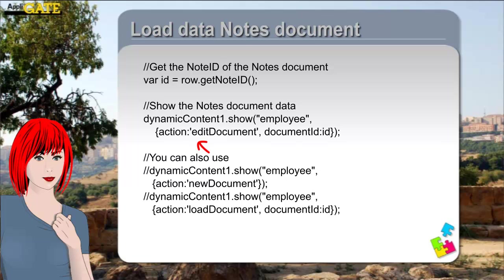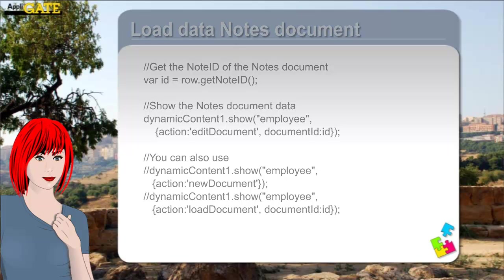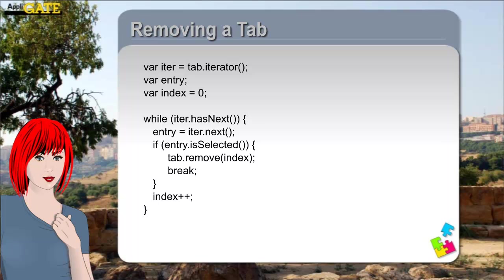This argument is specified as a JavaScript object where the properties of the object are defined together with its values — property and value are separated by a semi-colon. In the example, the action EditDocument is specified, however you can also choose LoadDocument. In both cases you retrieve the NoteID of the document from the var attribute, which is actually a reference to the NotesViewEntry object. When you choose NewDocument, a NoteID is of course not relevant. We can also remove tabs — to remove a tab from the Title Bar Tabs object, you have to use the remove method. The method needs an index, which you can determine by testing whether a tab is selected or not.